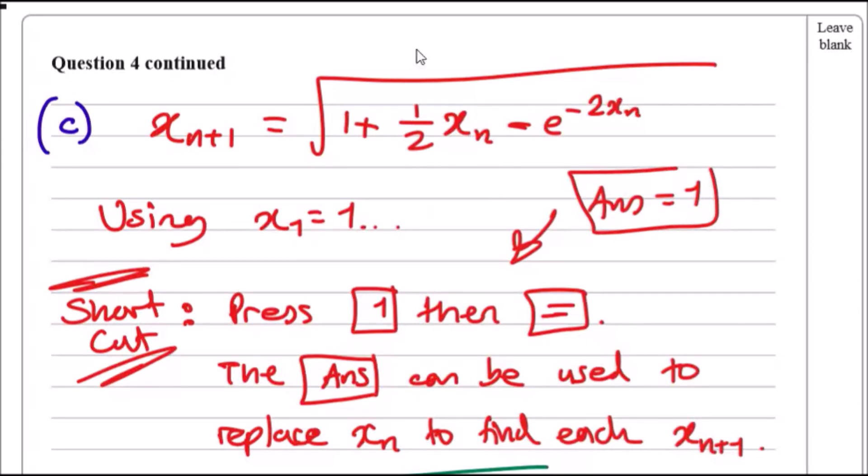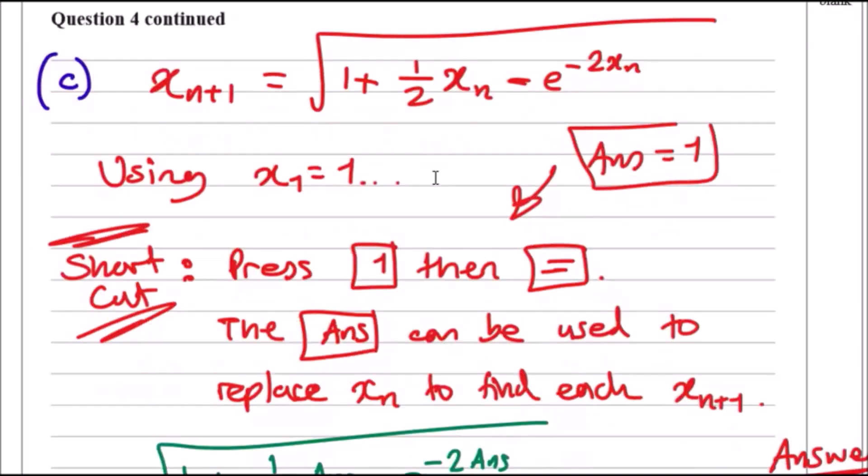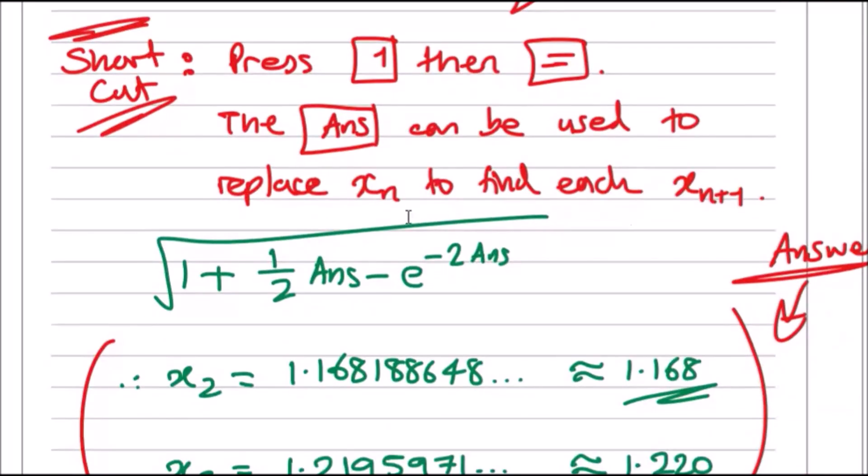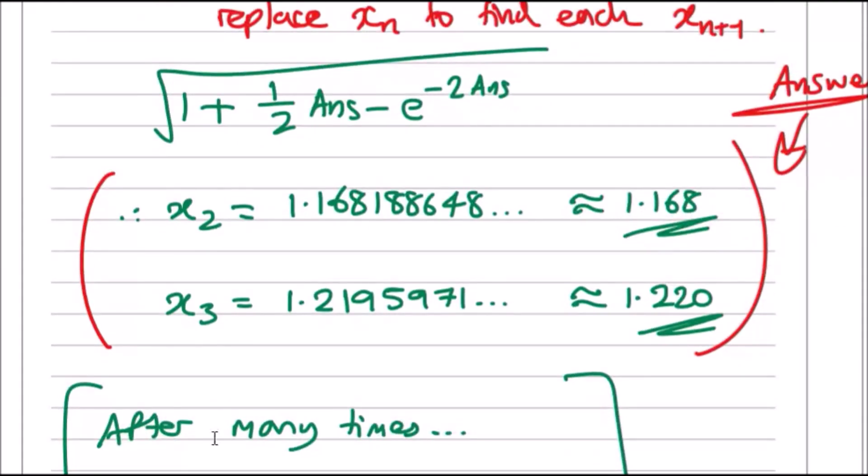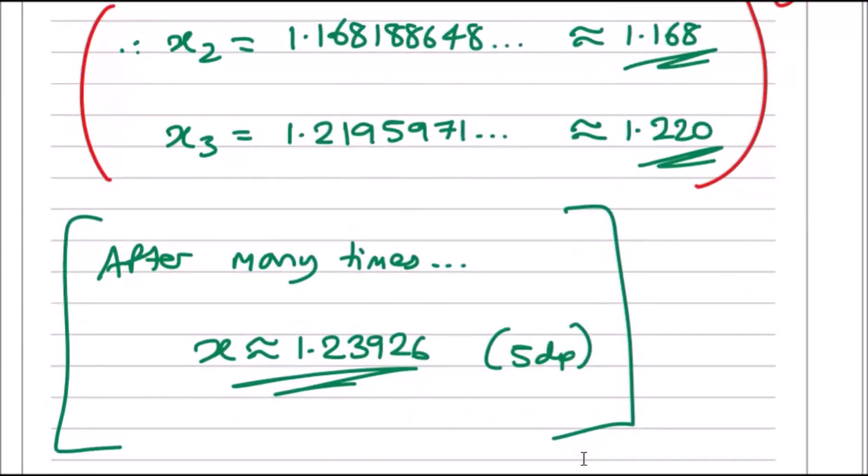This is what should be in your calculator. When you do that, making sure the answer is initially one, pressing equals the first time gives us the next value 1.168 and so on. Pressing equals again gives us the x_3 value, and if you keep pressing equals you get x_4 and x_5. Eventually, if you keep doing this many times the value will stabilize at about 1.2392. That will be the true x value, but you don't need that.